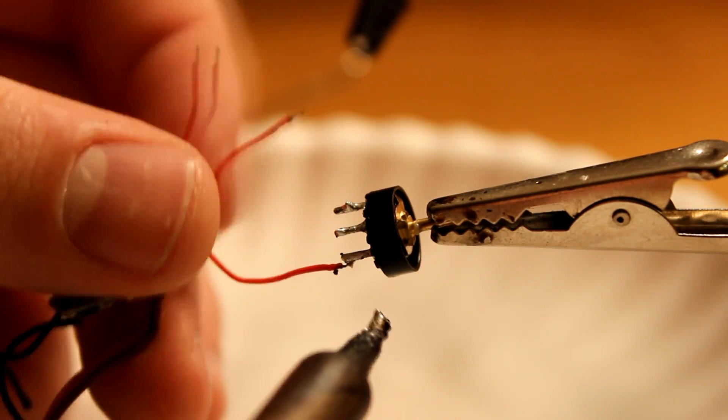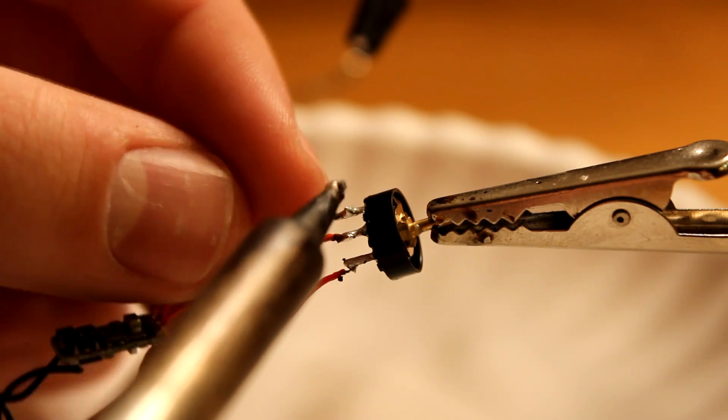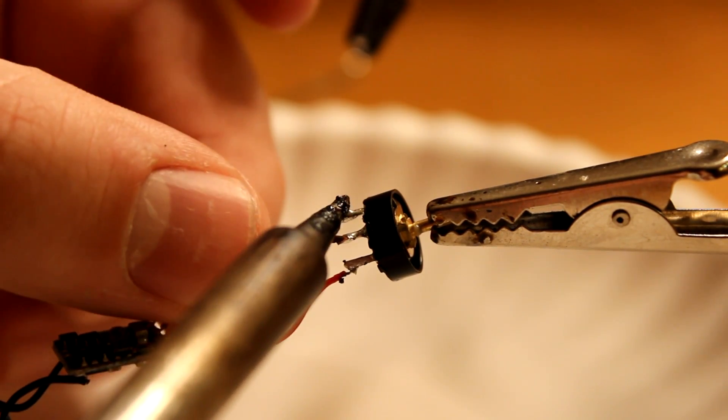You are going to solder them onto the old potentiometer. As far as I know, it doesn't matter what way the wires get soldered, but maybe pay attention to what order they were soldered just to be safe.